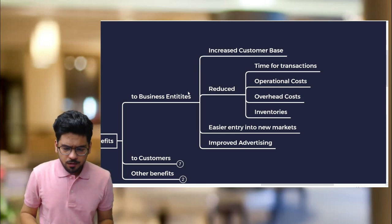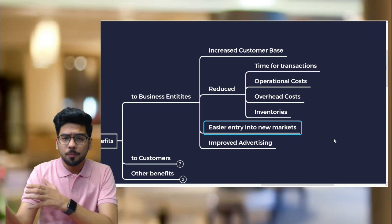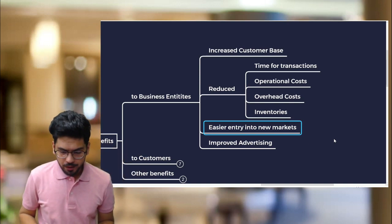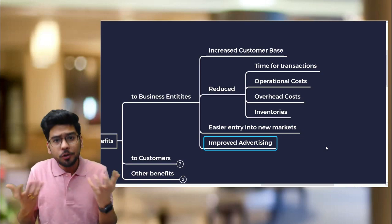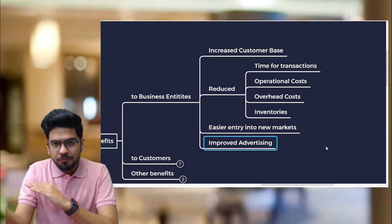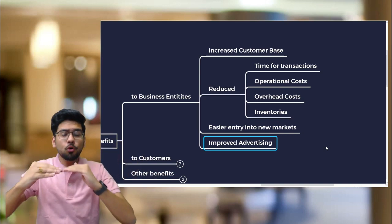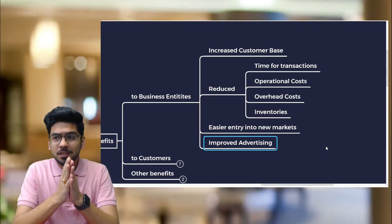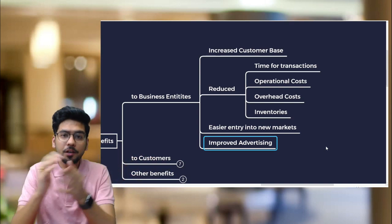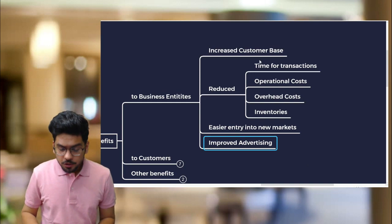Because of e-commerce, it is easy to enter new markets. Traditional brick-and-mortar shops have geographical limitations, but with the internet you can sell anywhere. Advertisement also improves — you can do targeted marketing. For example, if your product targets the 20–25 age group, you can market on Instagram or TikTok. You can choose the right platform and reach the right audience.